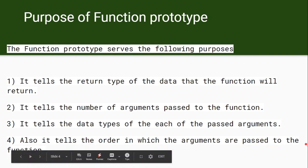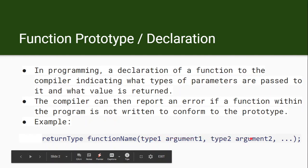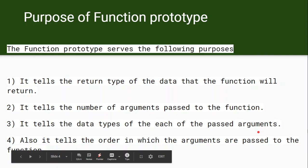The fourth purpose is that it tells the order in which the arguments are passed. For example, if the function is declared with int and then char, calling it with char and then int is also a mistake. So the order of arguments inside the function bracket must also match the prototype — type and order both matter.